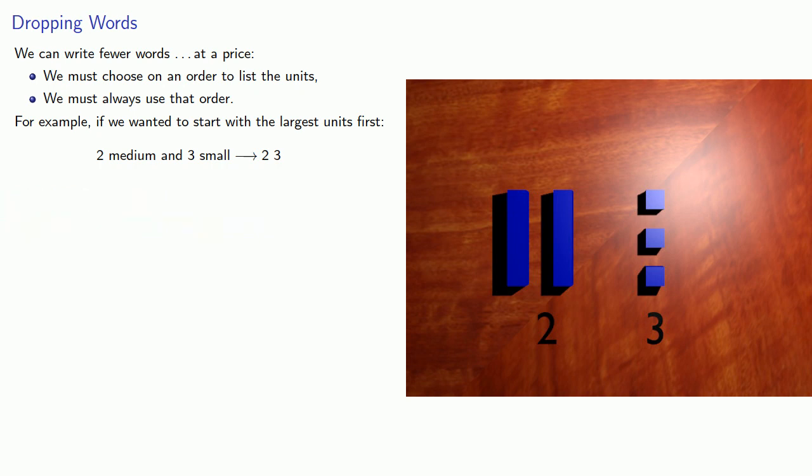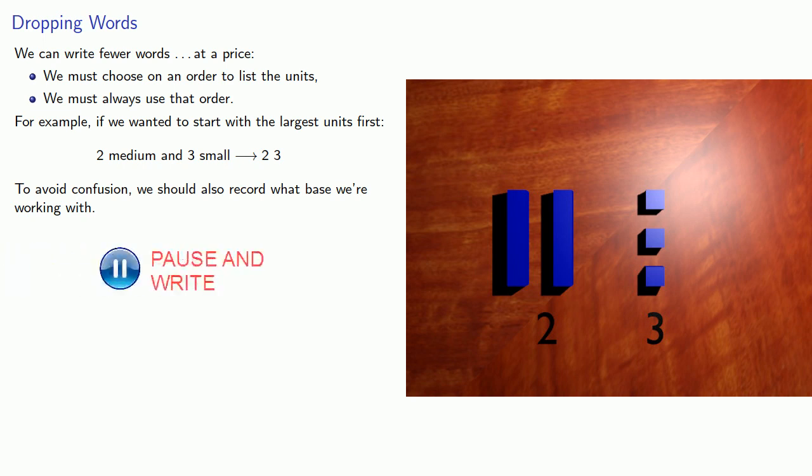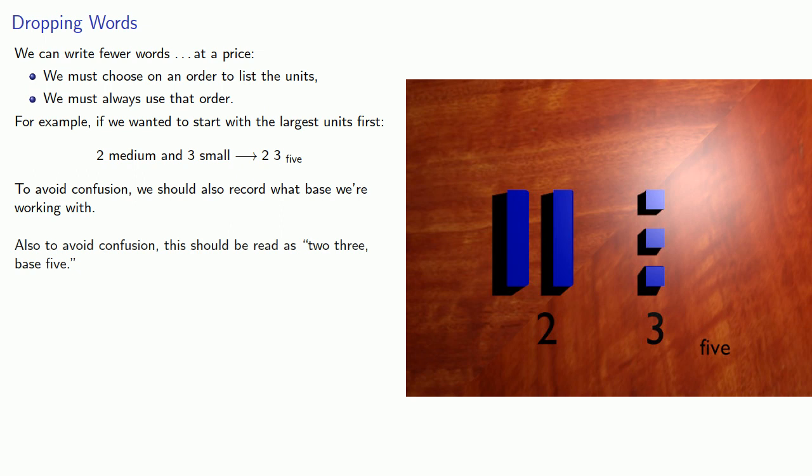Now, to avoid confusion, we should also record what base we're working with. And so we'll spell that out and subscript it. Also, to avoid confusion, we should really read this as 2, 3, base 5.